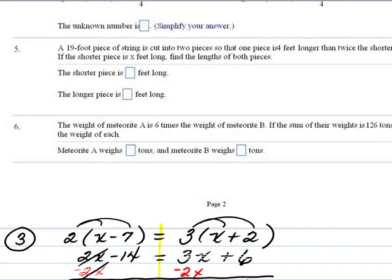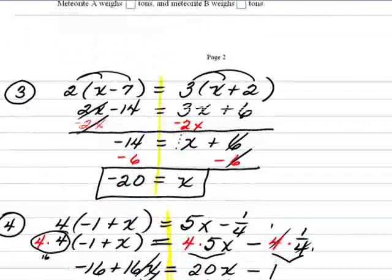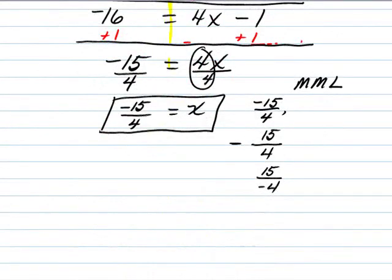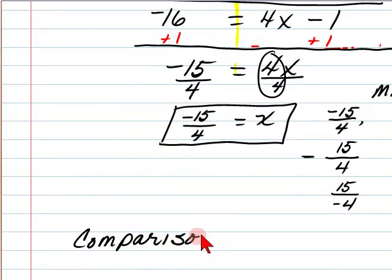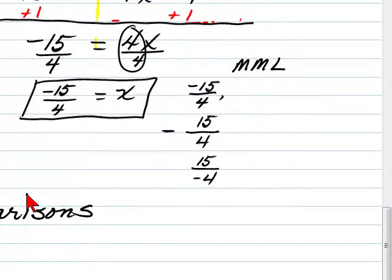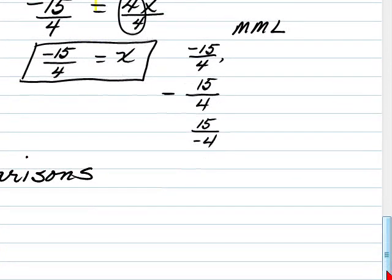When there are two unknowns, one of those two facts will be a comparison — it directly relates the two unknowns. And there is a pattern: two unknowns require two facts, three unknowns require three facts, and so on. Let me take a moment to discuss comparisons.